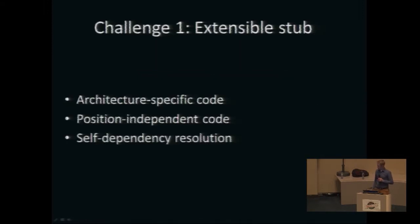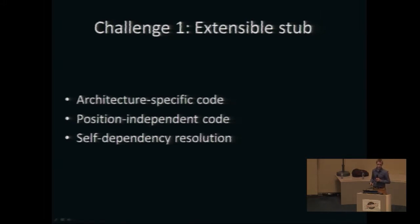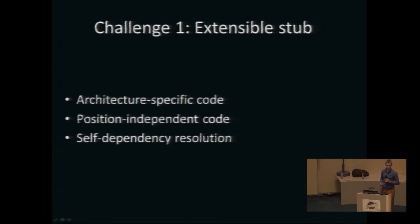Now we know the enforcement constraints. The first challenge of making a good packer is that you need an extensible stub — a piece of injected code that reverses the changes the packer made statically. Since the code section contains compiled assembly, our stub must also contain architecture-specific code. We also want the stub to be injectable anywhere in the process, maintaining position-independent code, and we cannot rely on Windows to fetch Windows API function addresses — we must do that ourselves through self-dependency resolution.